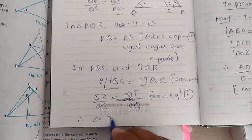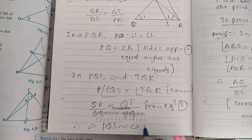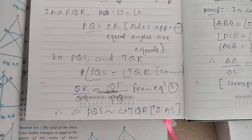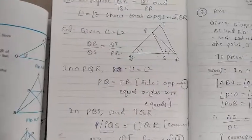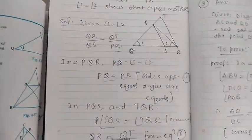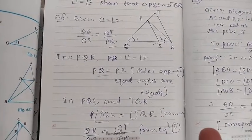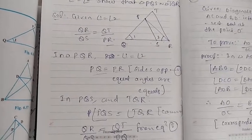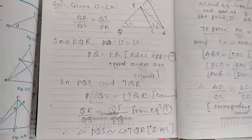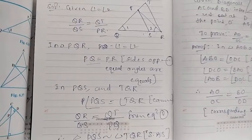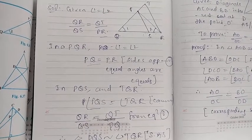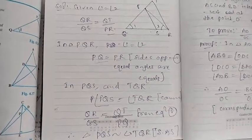Therefore, triangle PQS is similar to triangle TQR by the Side-Angle-Side (SAS) criterion. To summarize: you need to prove any three elements — either three angles, two sides and one angle, or three sides. I hope you understood. I will send homework to the WhatsApp group. Thank you for watching, have a nice day.